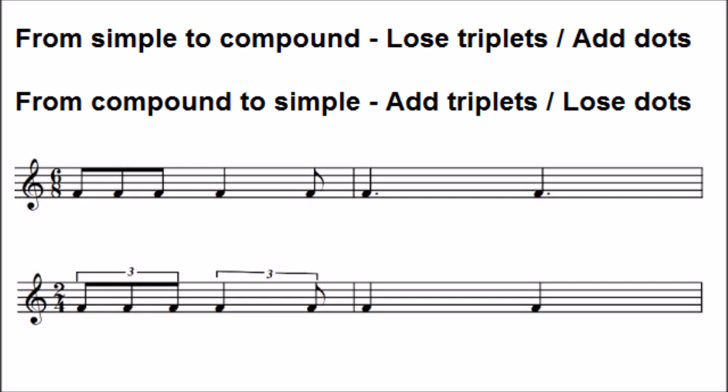Also, in simple time, you can't have three quavers in a beat unless you make a triplet out of them. But in compound time, three quavers are the natural way of writing quavers in a beat. So you don't need a triplet sign in compound time, but you do in simple time.